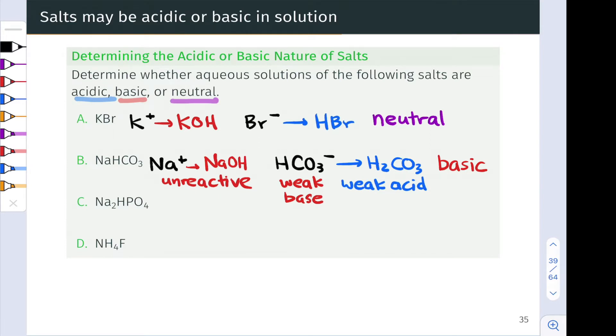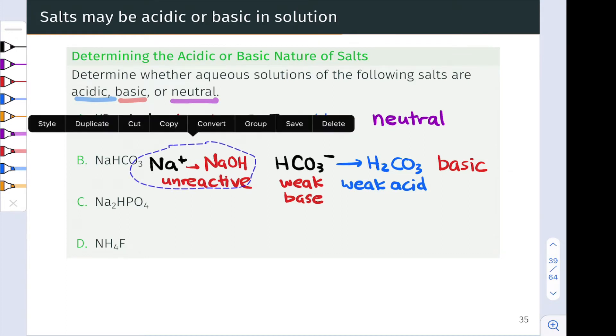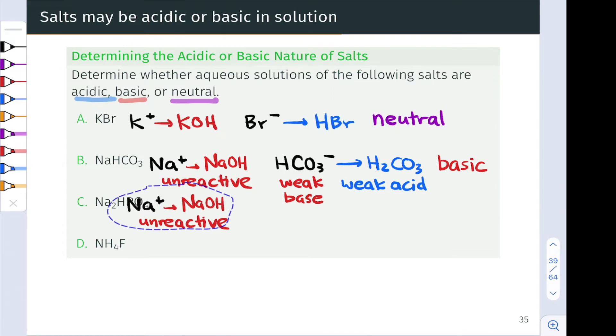Na2HPO4. Let's do the ion dance again. We have Na plus. And in fact, we already know that this is an unreactive cation. So I'm actually going to just copy this down because it's the exact same cation. We can apply the exact same reasoning. So if something's going to happen here in C, it's going to involve this anion HPO4 2 minus.